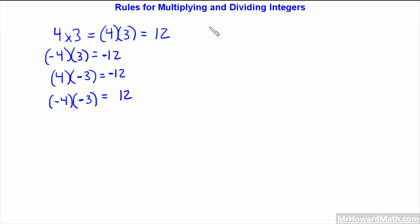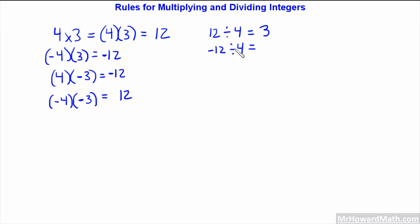Let's do some basic division problems. 12 divided by 4 equals 3 — a positive divided by a positive gives us a positive. Now negative 12 divided by positive 4: 12 divided by 4 will always be 3, then we apply the sign — there is one negative, so this is negative. Now positive 12 divided by negative 4: 12 divided by 4 is always 3, and there is one negative, so it's negative.